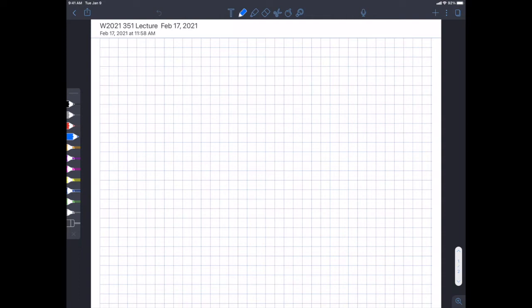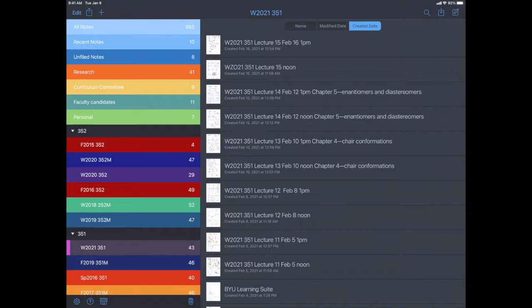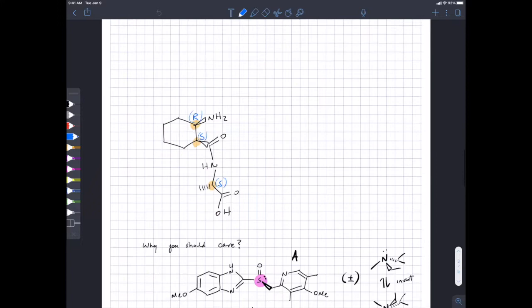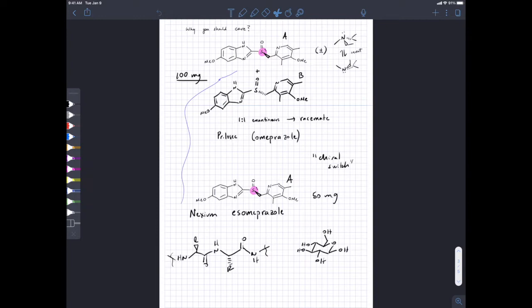We were talking last time about R versus S, and I had started to tell you the story of Nexium, the purple pill, along with its enantiopure cousin Prilosec. So I'm just going to copy these structures to facilitate our discussion.